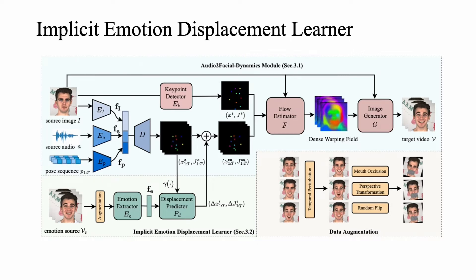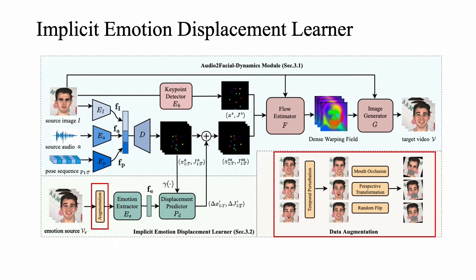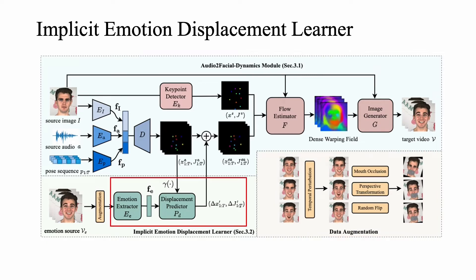Specifically, we design an effective data augmentation strategy on emotion sources to alleviate the influence of undesired factors. Then we extract the emotion feature from the processed video frames and take it together with the motion representations generated from the audio-to-facial dynamics module to the displacement predictor to produce the emotion displacements. By linearly combining all motion representations from the two modules, our model complementarily covers both the mouth shapes and emotional dynamics.